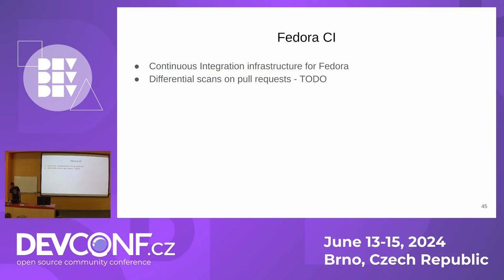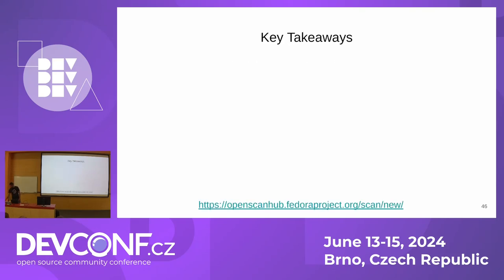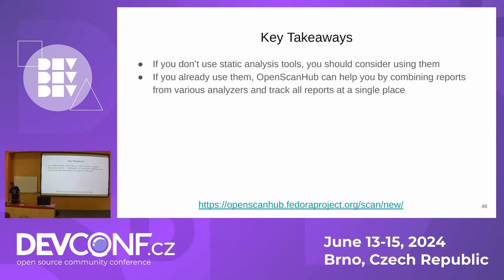The last integration point is Fedora CI — the continuous integration infrastructure for Fedora. Ideally we should be running differential scans on pull requests, which should happen somewhere in the future. The key takeaways from this talk: if you don't use static analysis tools, please use them. If you already use them, maybe try to use OpenScanHub — you can use different analyzers with the service. Especially use static analysis if you have legacy code, or more specifically use differential scans.